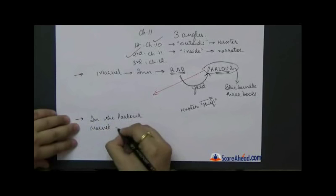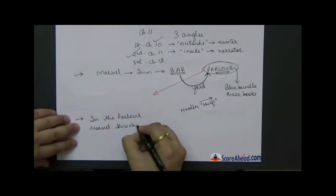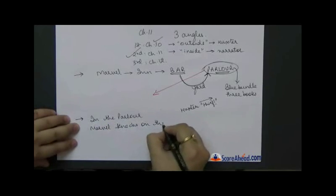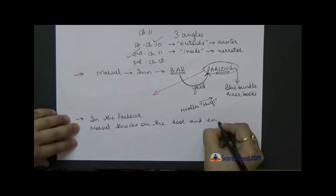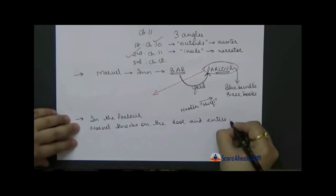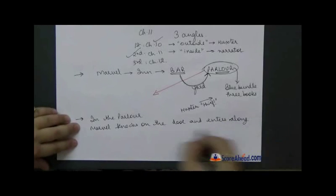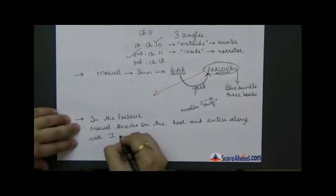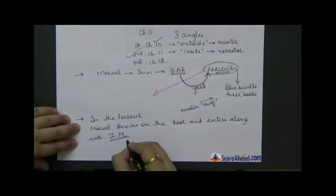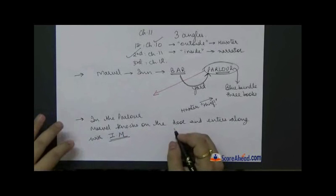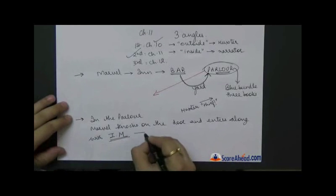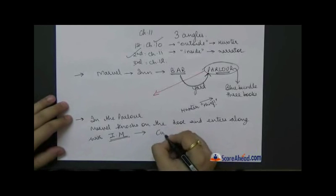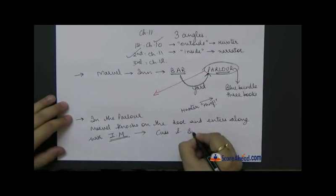In the parlor, Marvel knocks on the door and enters. But do you think he has entered alone? No, he has entered along with the invisible man whose work he has come to do right now into the parlor. So he enters and whom do they find there? They find Cuss and Bunting.